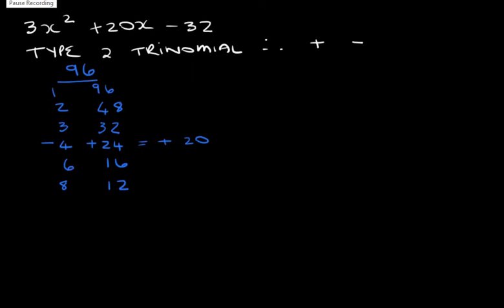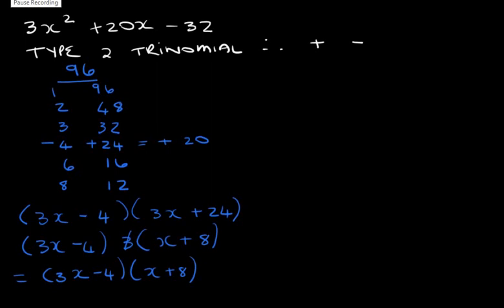What's our next step? Our next step is to write down the first term without the square on the variable. Now that we've done that, let's fill in our factors. Our next step is to look for the common factors in both brackets. Is there a common factor in the first bracket? No, there isn't. Is there a common factor in the second bracket? Yes, there is. Let's take out that common factor and cancel it. That gives me an answer of (3x - 4)(x + 8).